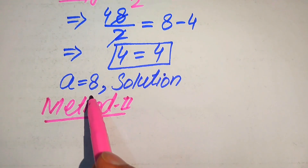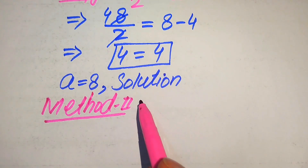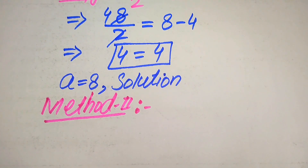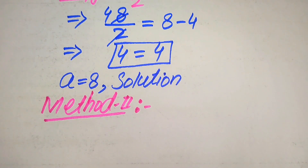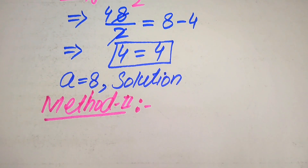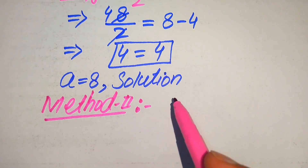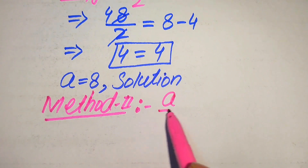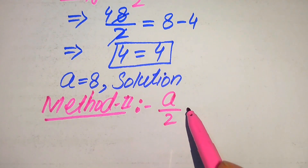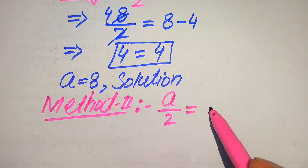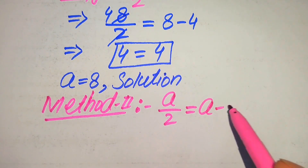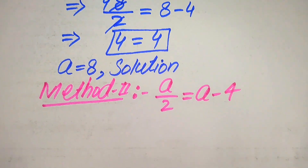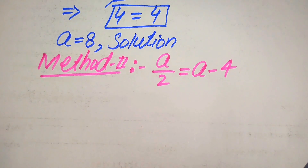I hope you like both of these methods, but if you have any other method in your mind, please don't hesitate to write it into the comment section. In the second method, we copy down the given equation: a over 2 is equals to a minus 4.